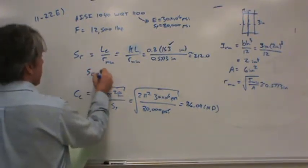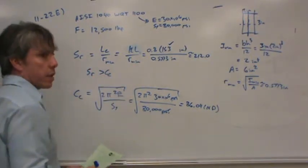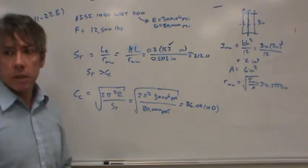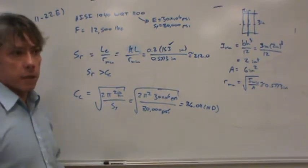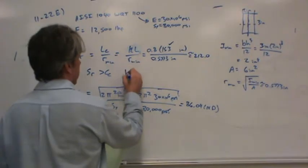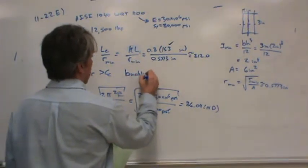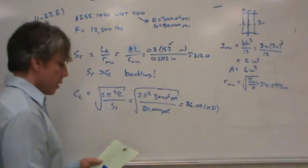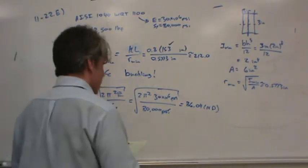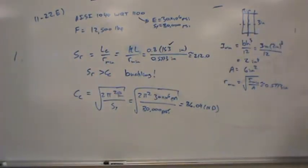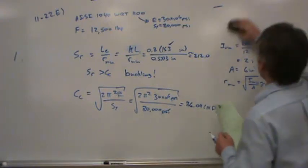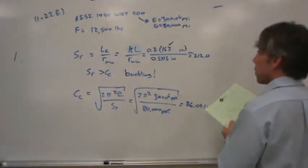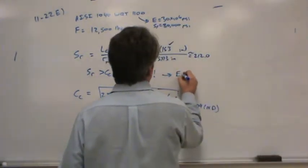So, since the slenderness ratio is greater than the column constant, will this column tend to buckle? Yes. In order to figure out the maximum load that this column can support without buckling, we have to use Euler's equation.